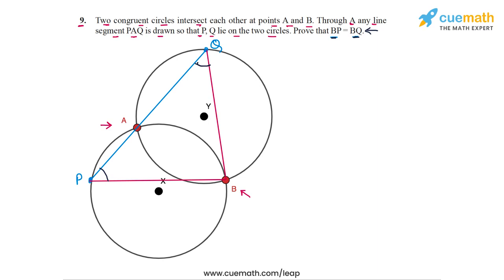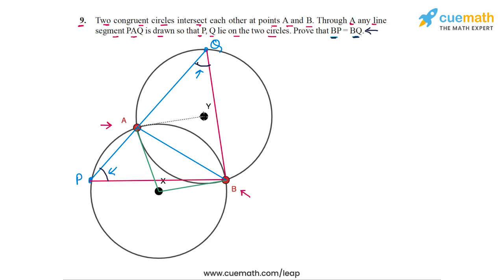To do that, we will join A and B — the common chord of the two circles. This chord AB subtends angle P on the first circle and angle Q on the second circle. We will also join the endpoints A and B to the centers of the respective circles: joining A to X and B to X, and joining A to Y and B to Y.